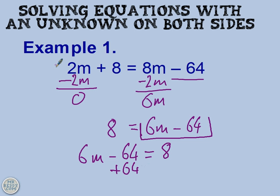So just remind yourself what we did. We looked for the smaller of the two coefficients and then we needed to subtract them from both sides. The reason why we needed to subtract them is because this is a positive 2m. And so we do the opposite in order to remove it. We need to take it away.